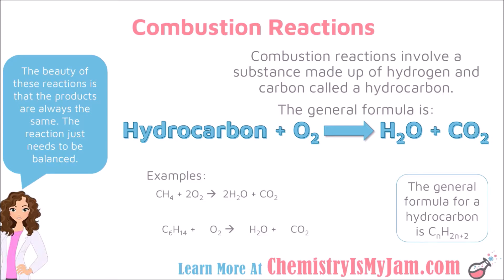For our next reaction, I recommend that you write in pencil because we are going to be doing some tweaking along the way. There are 6 carbons on the left, so I need to put a 6 here to balance those. Then there are 14 hydrogens on the left, so there should be a 7 here to balance the hydrogens. Once I have balanced the carbons and the hydrogens, I run into a problem with the oxygens. On the left hand side I have 2 oxygens — that is an even number. On the right hand side I have 7 here plus 12 here for a total of 19, which is an odd number. So you run into a problem balancing the oxygens — it makes you need to put a 9.5 here to make it balanced.